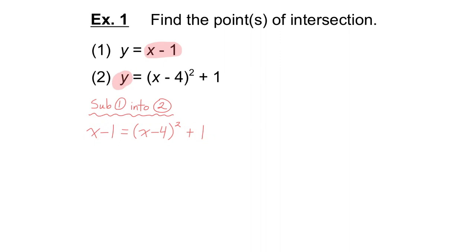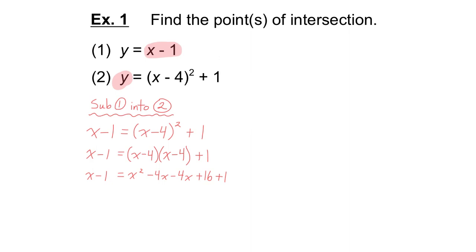Now we need to solve for x. I'm going to expand and simplify. Remember, the exponent of 2 means you're multiplying the brackets by itself. In order to solve a quadratic equation, you have to have it equal to 0. So I set this equation equal to 0 — subtracting x and adding 1, doing the opposite operations. I simplify by adding like terms, and I end up with 0 equals x squared minus 9x plus 18.